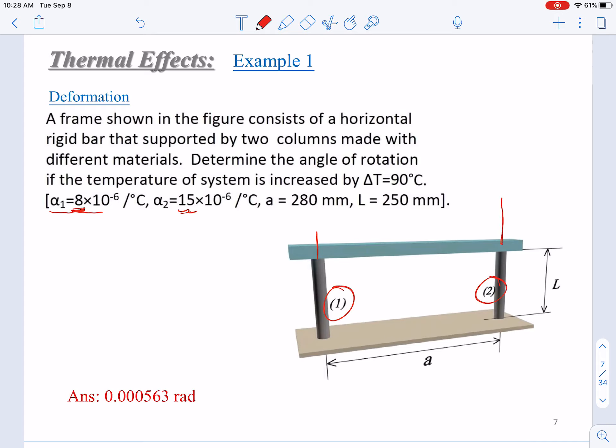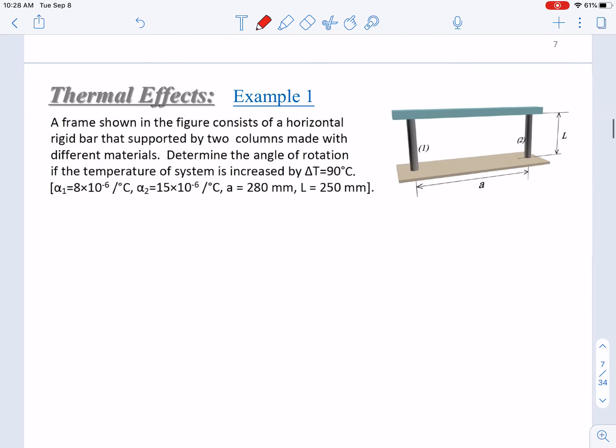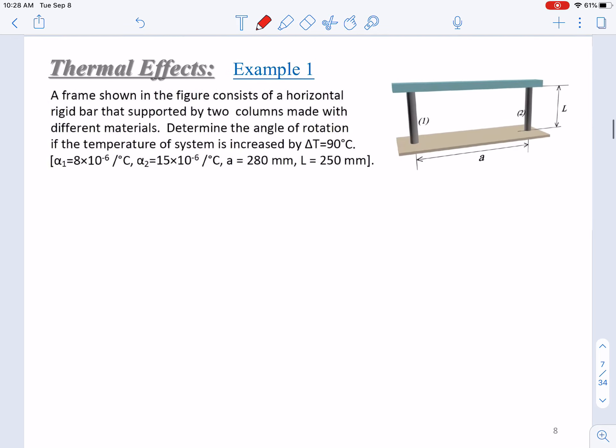We draw a parallel line to the original rigid bar. Then you can see here, if connected, we get an angle. This is the angle of rotation we are calculating when the temperature is increased. Let's see how to do it.